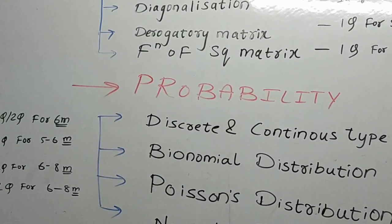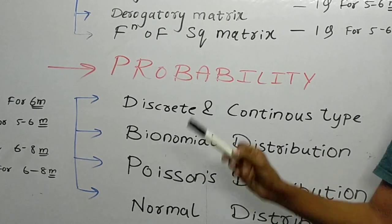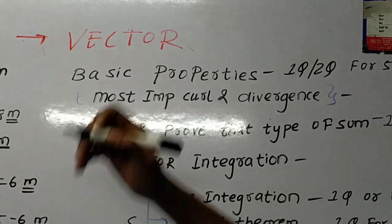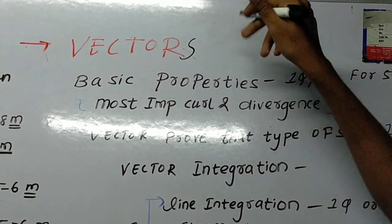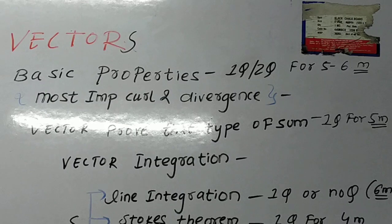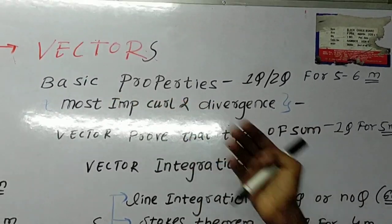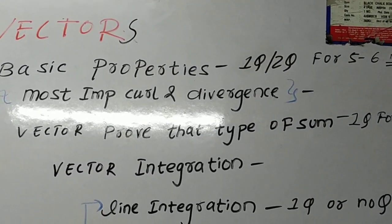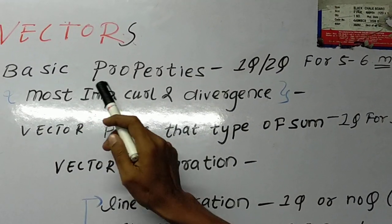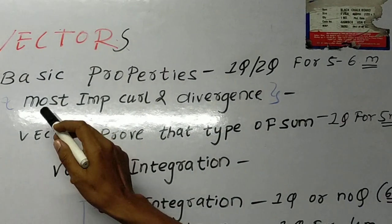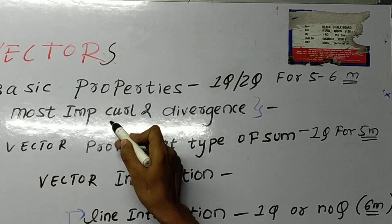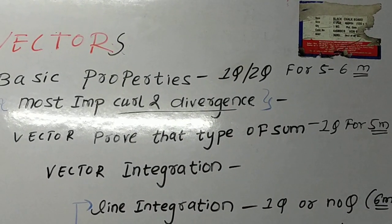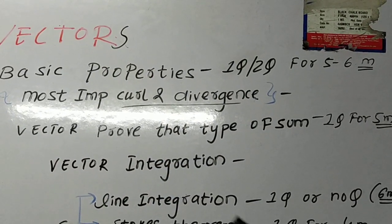Friends, probability is also a simple chapter. Before going to the exam you must practice this chapter. Moving on to vectors — there are many topics. Basic properties: one or two questions for five to six marks. The second and most important topic is curl and divergence — I have written here 'most important question' for curl and divergence.